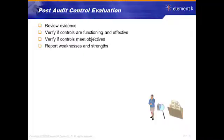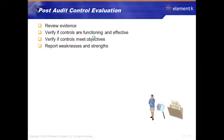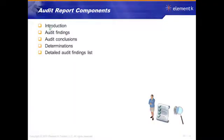And we report on these strengths and the weaknesses. Now, a report can be just a few pages, or it can be hundreds of pages. It really depends upon what you were auditing and the depth to which you're expected to report, but they all have some commonalities. They'll all have some kind of introduction with an executive summary, they'll have the findings, they'll have conclusions, they'll have determinations, and then they'll have detailed lists.